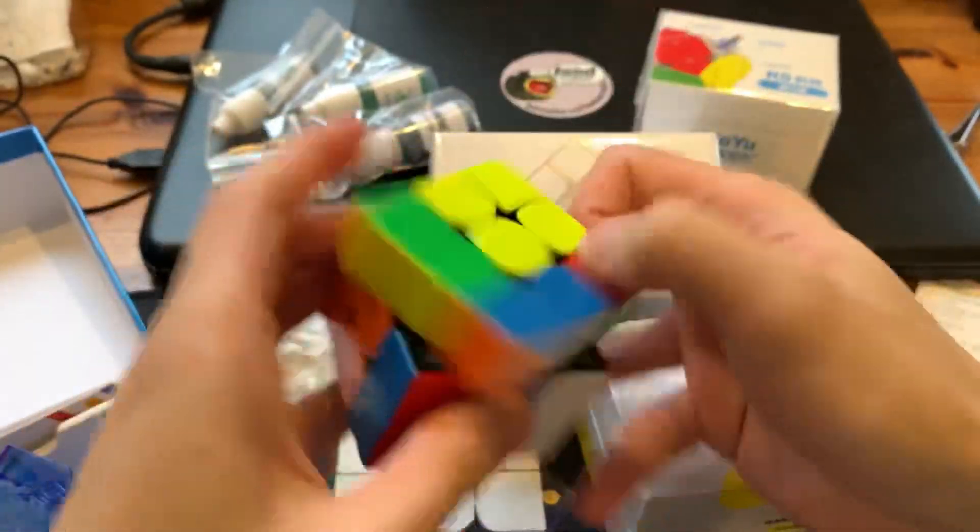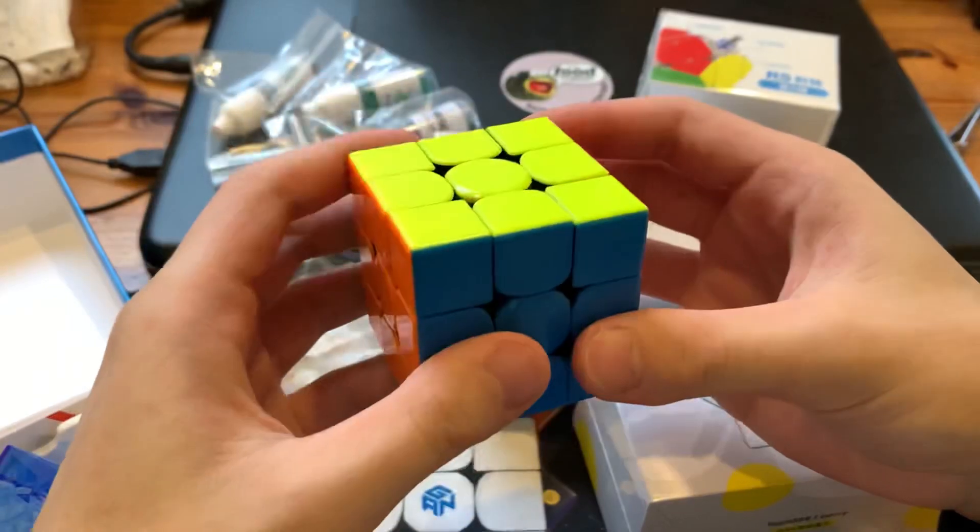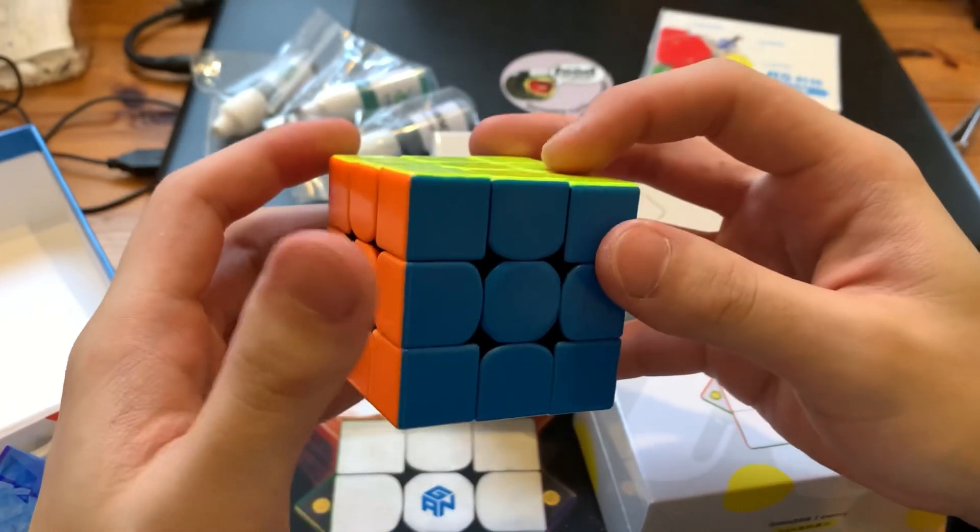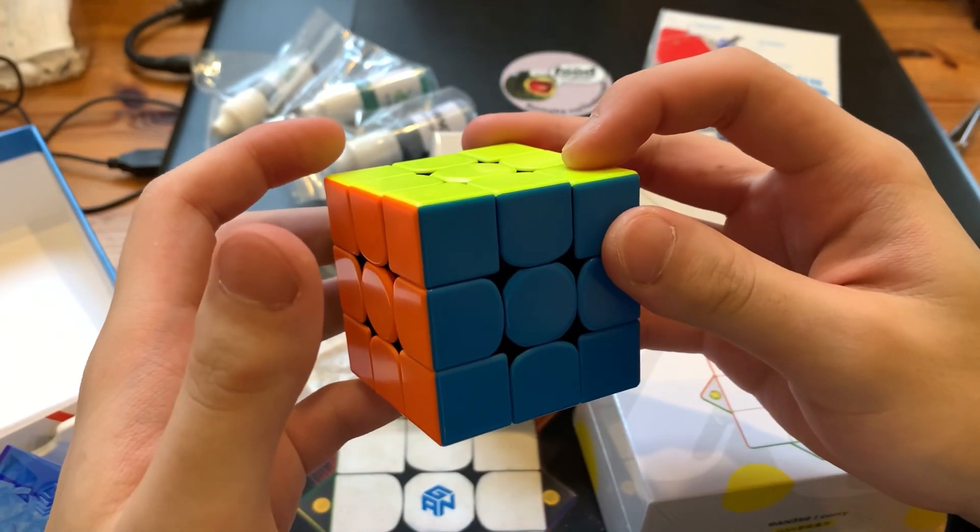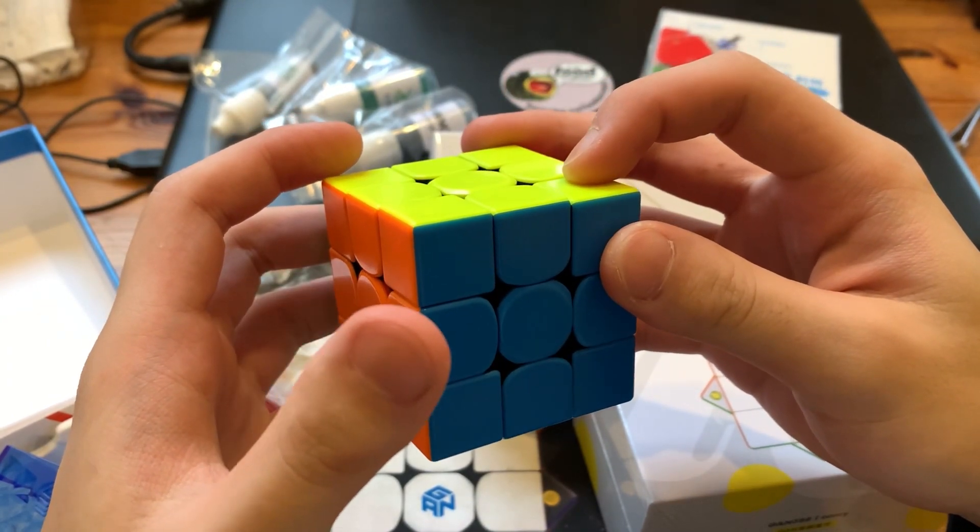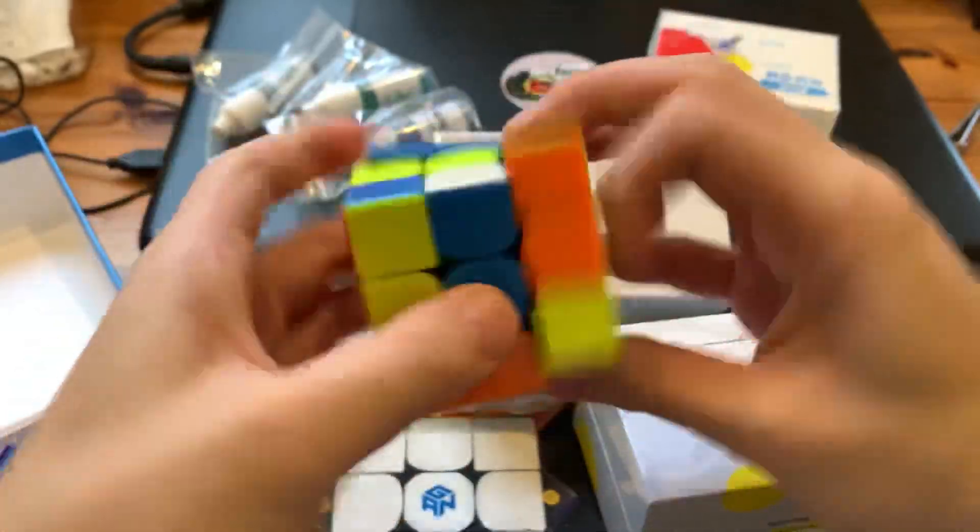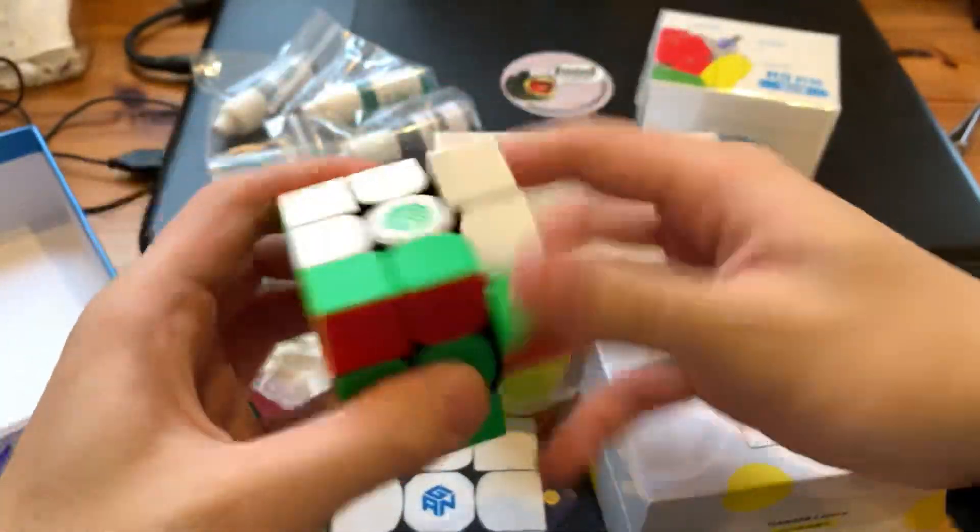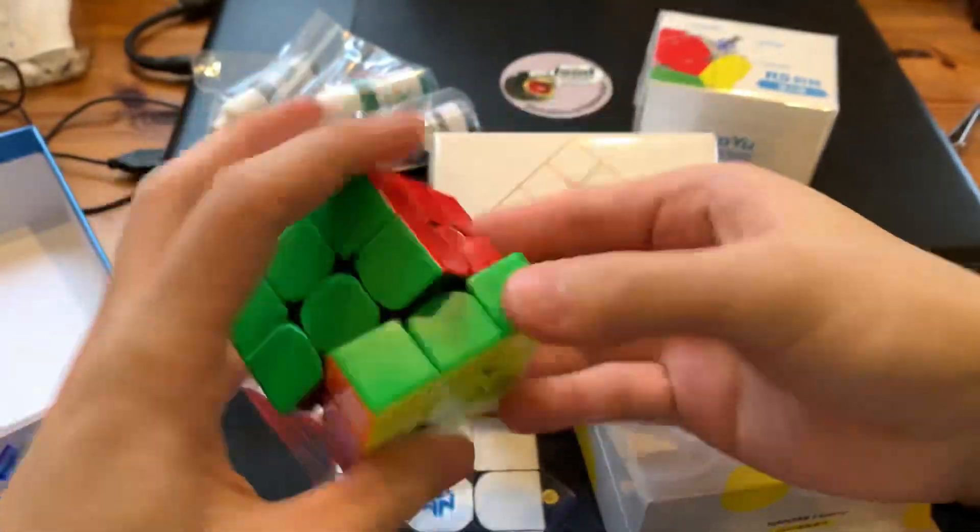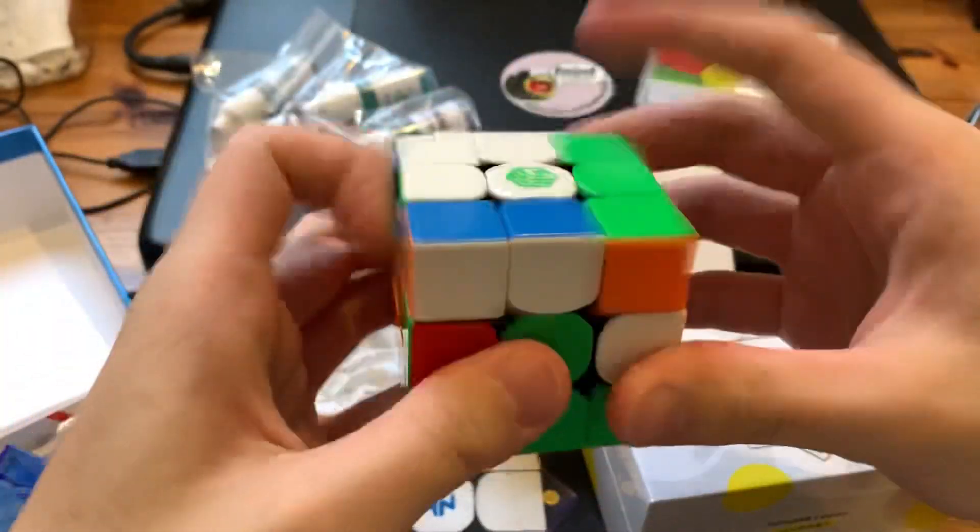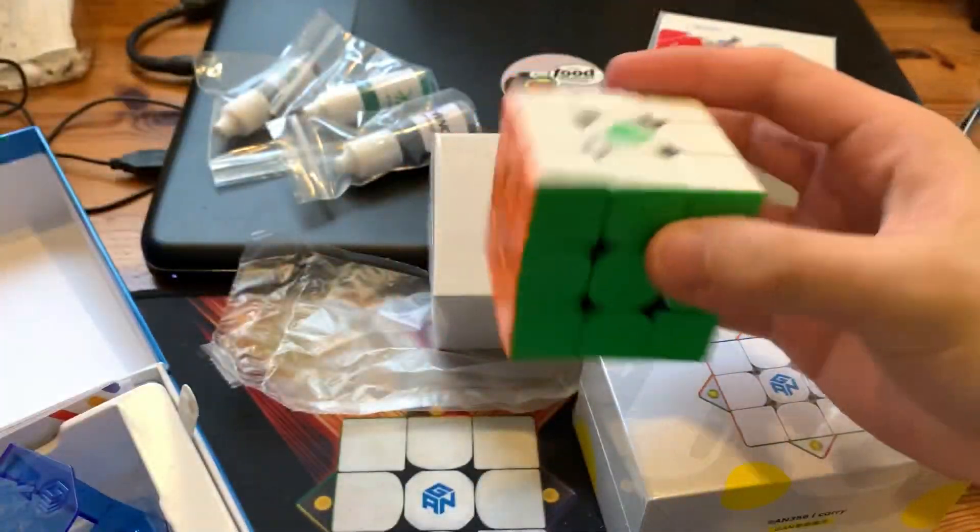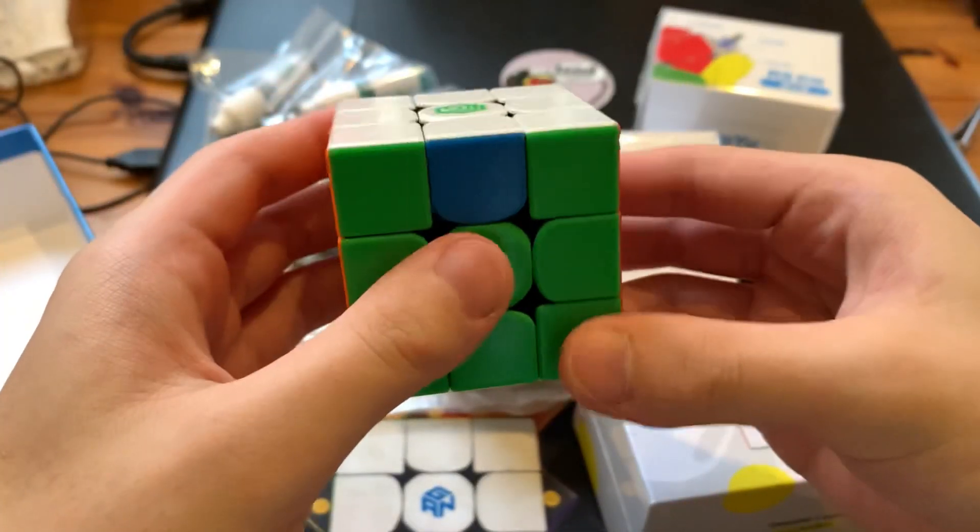Wait yeah, it feels like a combination of GAN 354, like the mini GAN, and the GAN XS and a GAN Air M. This is really good out of the box. Wow, yeah, see this is why I love MS cube. They're really good, they're cheaper than GAN but they're just as good as GAN. So yeah, that's great, like just look at that.